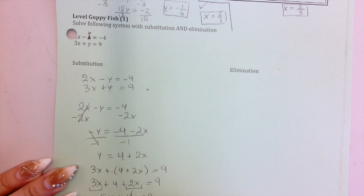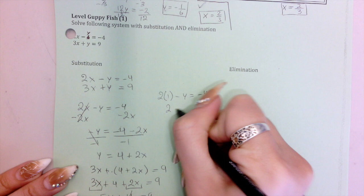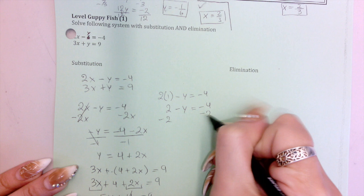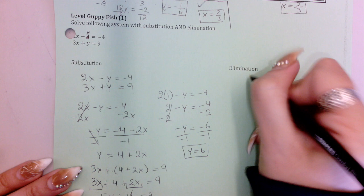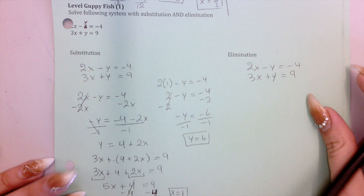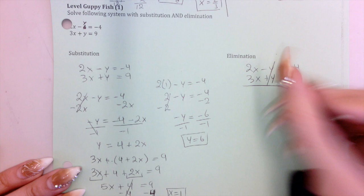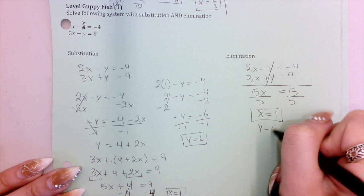Subtract 4 from both sides: 5x equals 5. Divide by 5, and x equals 1. Plugging back into the first equation: 2 times 1 minus y equals negative 4, so 2 minus y equals negative 4. Subtract 2: negative y equals negative 6. Divide by negative 1, and y equals 6. For elimination, 2x minus y equals negative 4 and 3x plus y equals 9 — the Y's are already set up to cancel. Adding straight down: 5x equals 5, so x equals 1. The same work gives y equals 6.